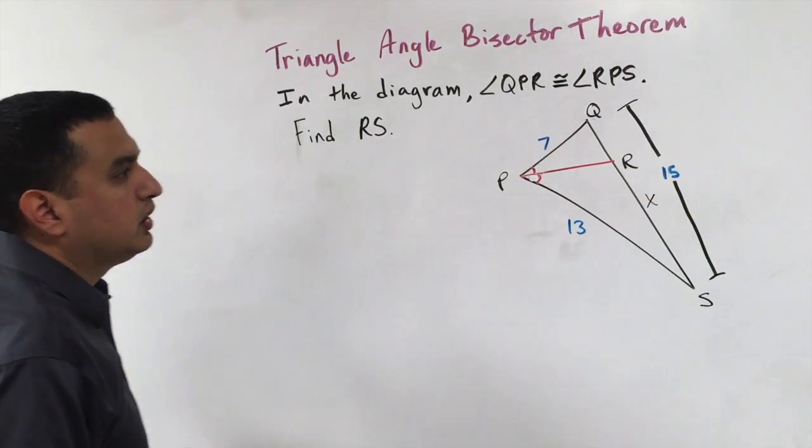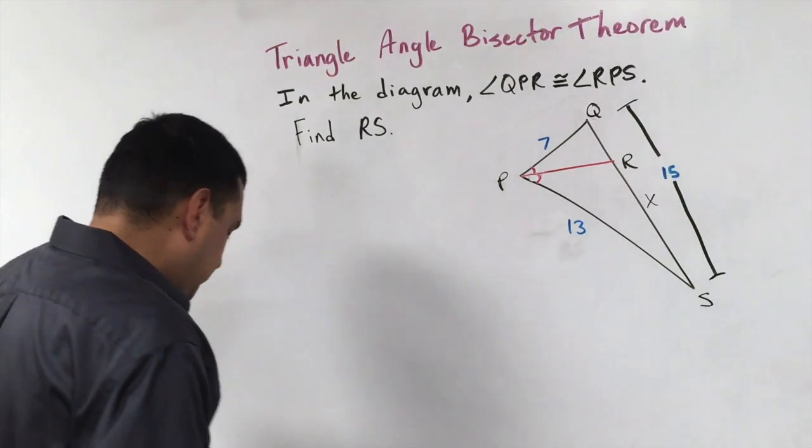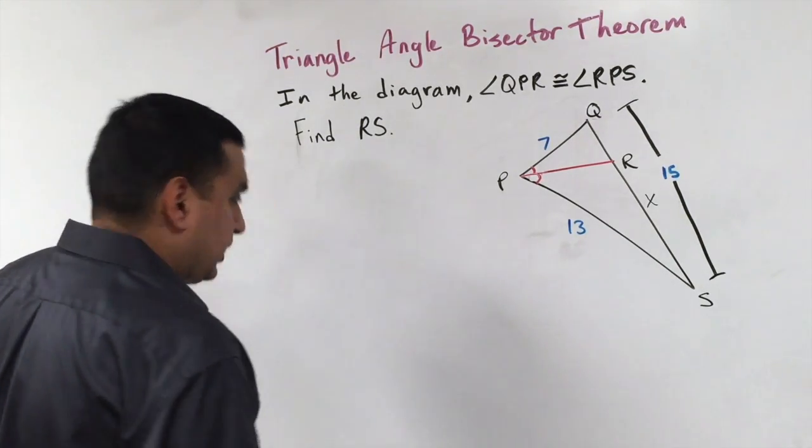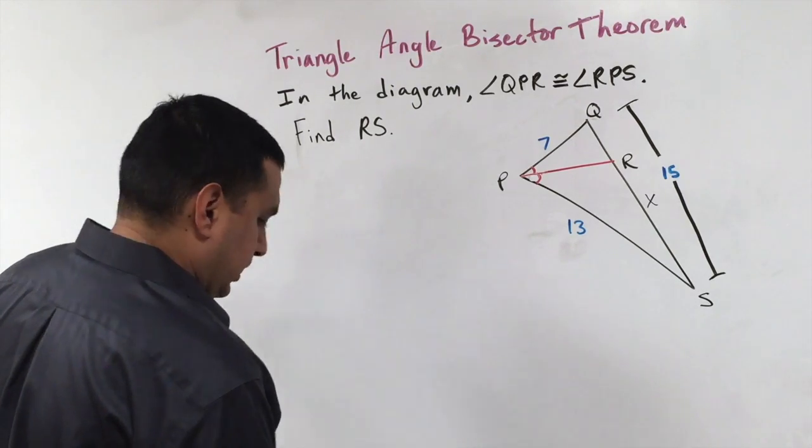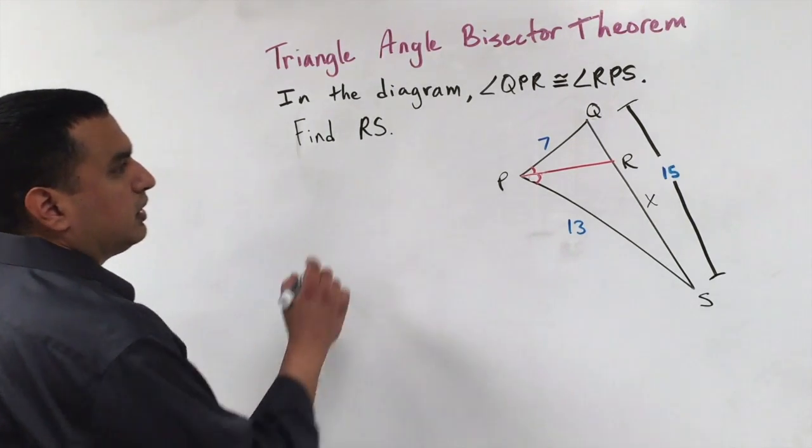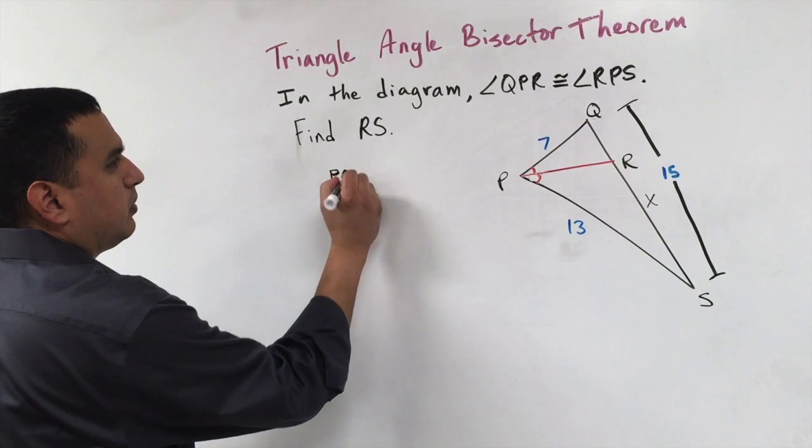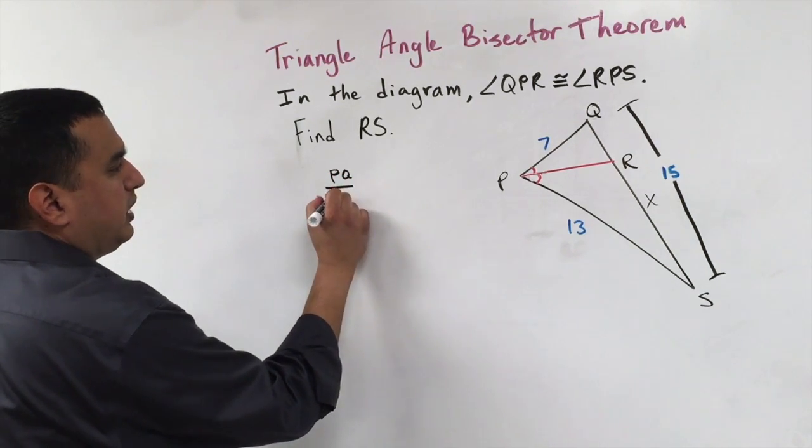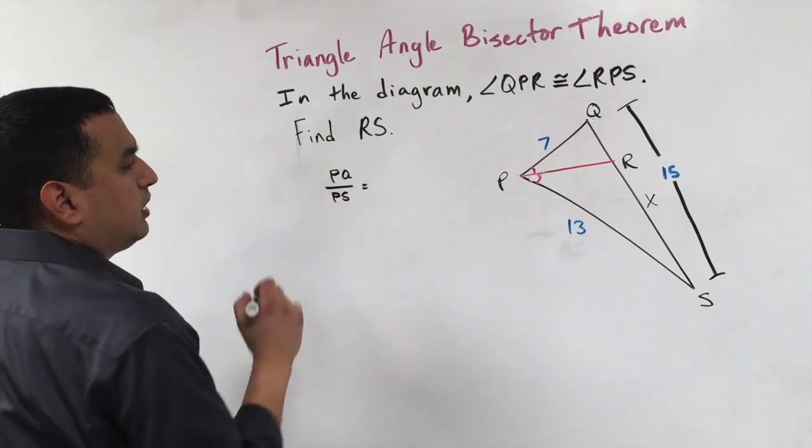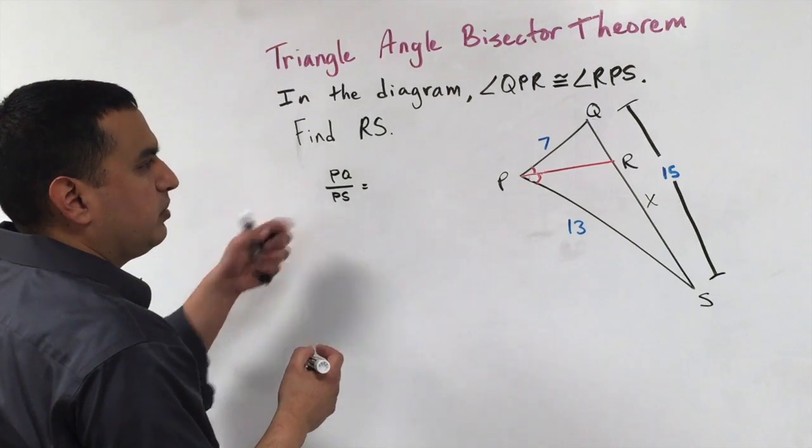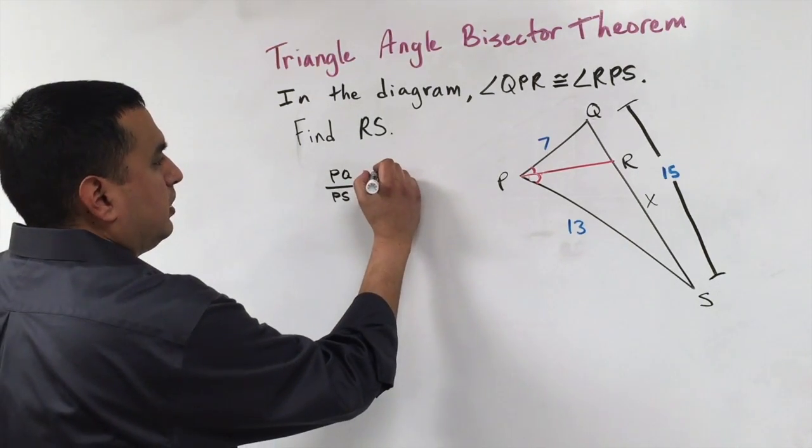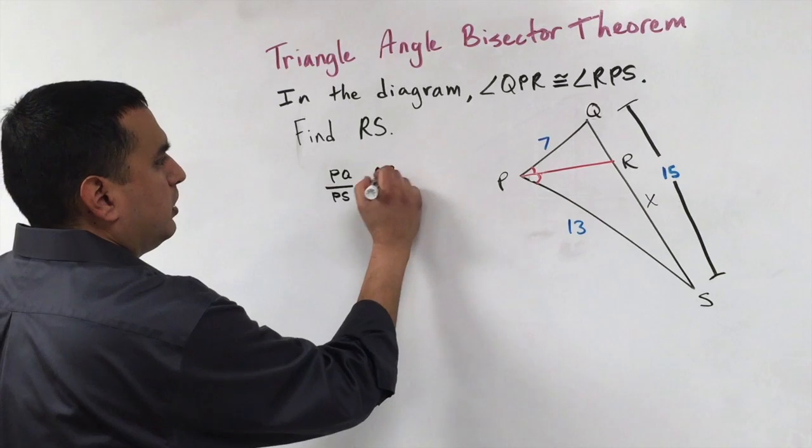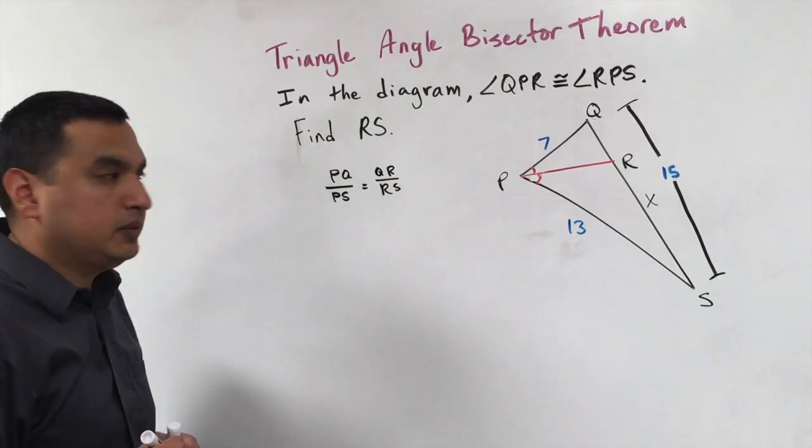So what I can do is that I can take this segment, or I can take this problem, and I can write it as PQ over PS is congruent, or the ratio of PQ to PS is equal to the ratio of QR to RS.